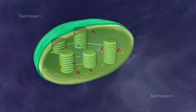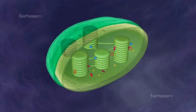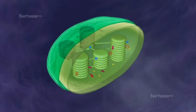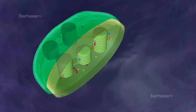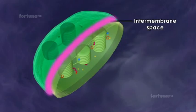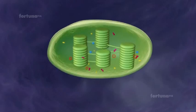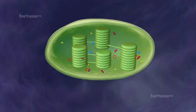The chloroplast is enclosed in a double membrane, the inner and outer phospholipid. Between these two layers is the intermembrane space. Inside this inner membrane is a matrix of enzymes and water known as stroma.